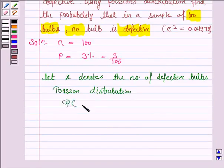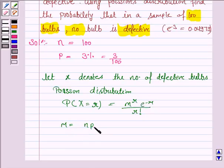The probability of the random variable X at x equals M to the power x, E to the power minus M upon x factorial, where M is the mean of the distribution which is given by the formula N into P. N is 100, P is 3 by 100, so the mean is 3.